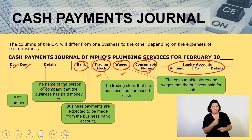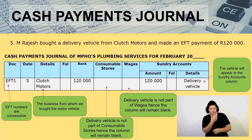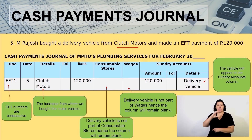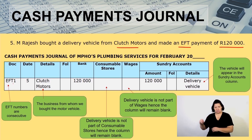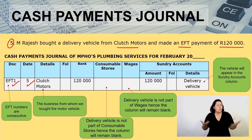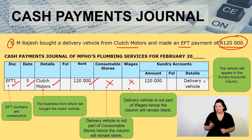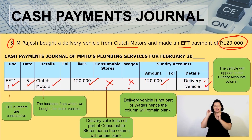Let's see how I would record a transaction. M. Rajesh bought a delivery vehicle from Clutch Motors and made an EFT payment of 120,000. The document is EFT, the date is the fifth, and the details show Clutch Motors. We paid 120,000 for the vehicle. It's not consumables, it's not wages, so I'll bring it to my sundry accounts: 120,000 — delivery vehicle.